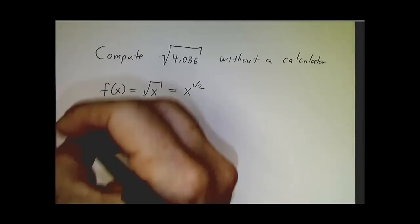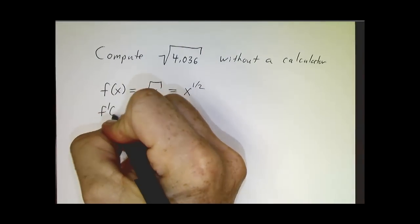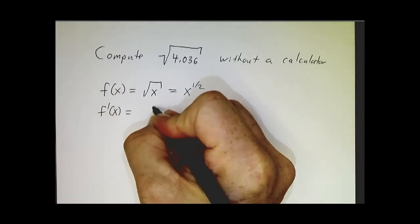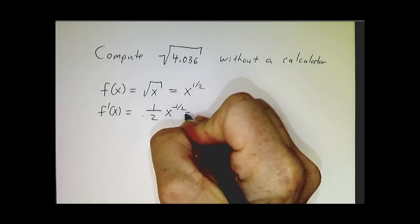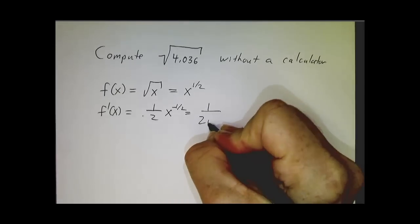And we're going to want to take derivatives, so we better figure out what the derivative of that is. And that's one-half x to the minus one-half, in other words, one over two root x.